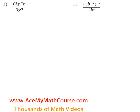Now let's simplify these expressions involving exponents. So starting with number 1, you have 3y to the power of 7 entirely cubed, all over 9y to the power of 9.